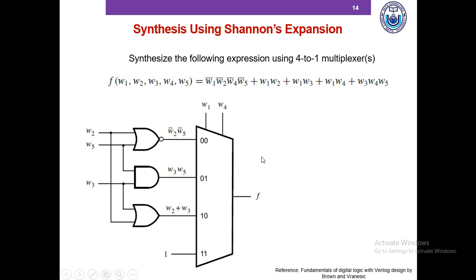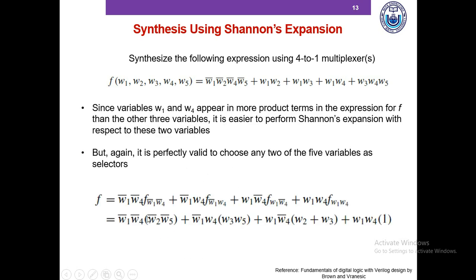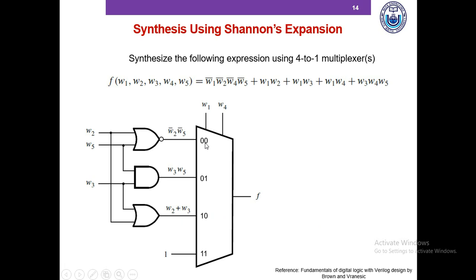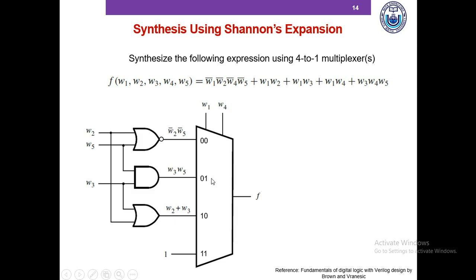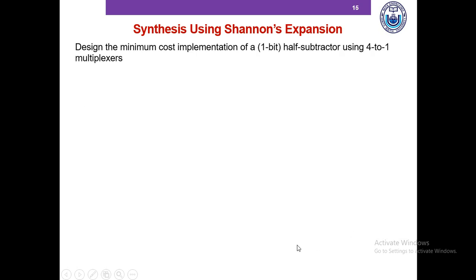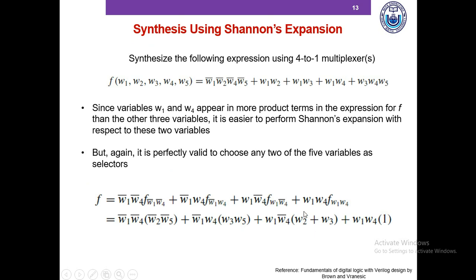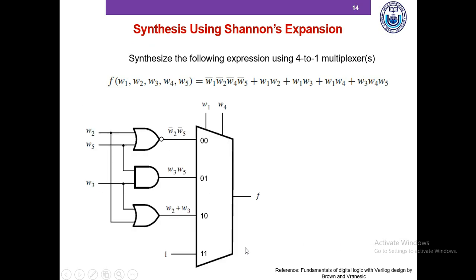If we draw the circuit using multiplexers, the cofactor W2_bar·W5_bar goes to the 00 input, W3·W5 goes to the 01 input, W2+W3 goes to the 10 input, and 1 goes to the 11 input. This is the full implementation of the expression using a 4-to-1 multiplexer.